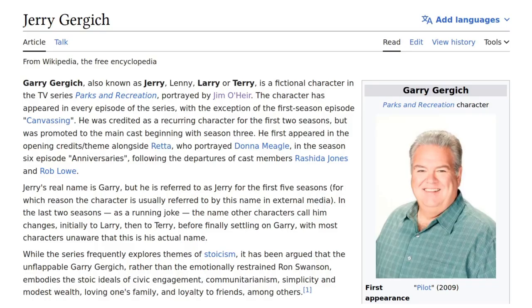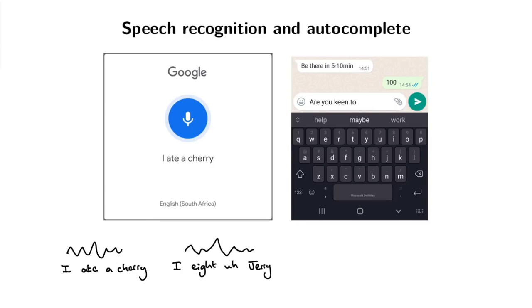Just in case you don't know, this is Jerry. So if we assume that the acoustics are exactly the same, what Google could do is say: well, this sequence of written words is more probable than this other sequence. If we know that the probability of this word sequence is higher than the probability of the other, then Google could say: okay, I got this acoustic signal and it looks the same for both, but because I know beforehand that this sequence is more probable, I'm going to output that sequence.